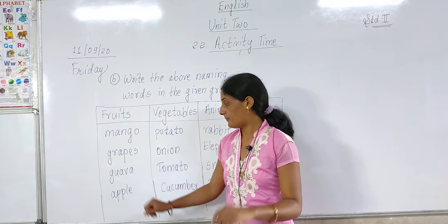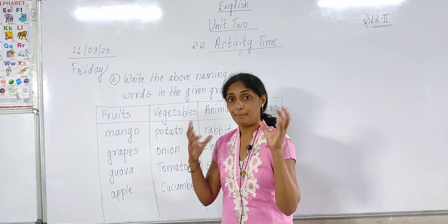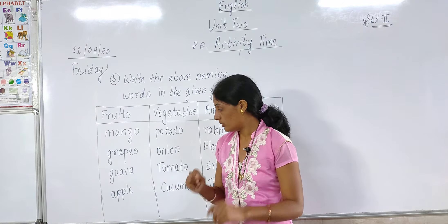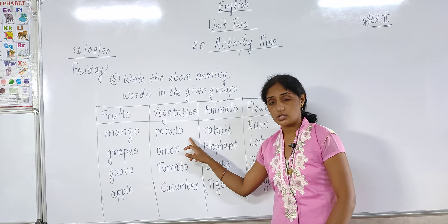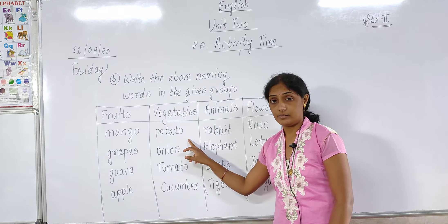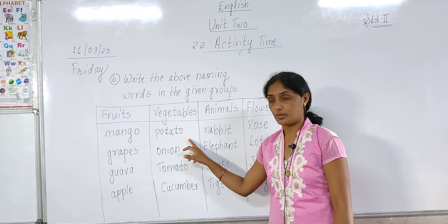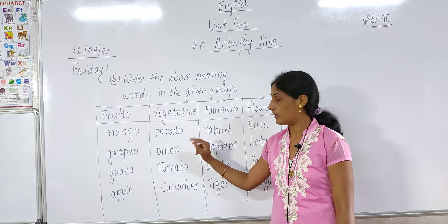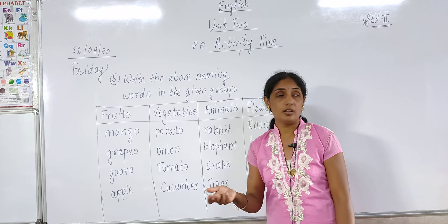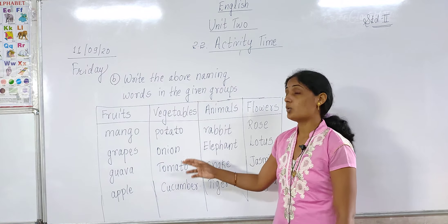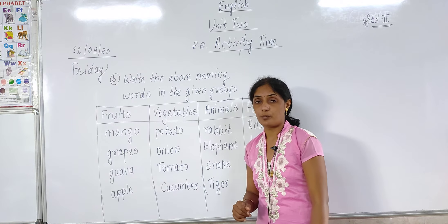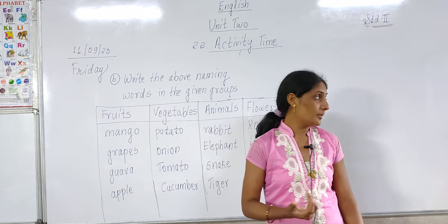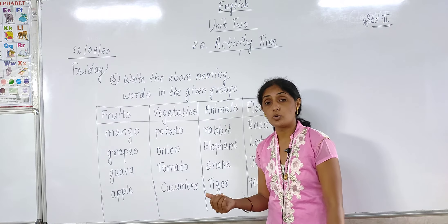Guava means peru in Marathi. Apple — apple means what in Marathi? Now for vegetables: potato means what? Onion — O-N-I-O-N — in Marathi we call it kanda. Next one is tomato. Have you eaten tomato? Tomato means what in Marathi?